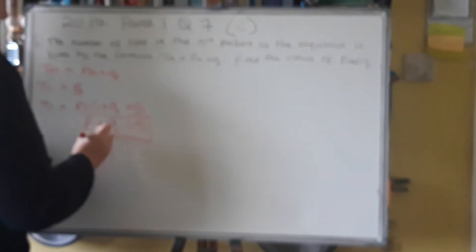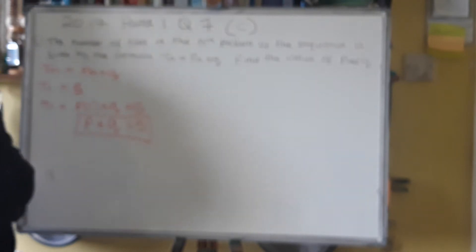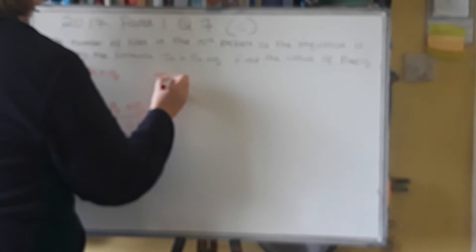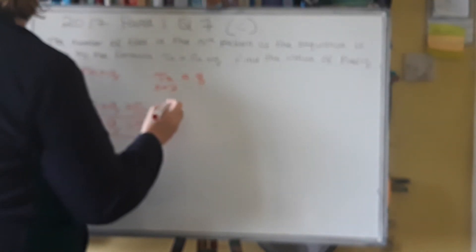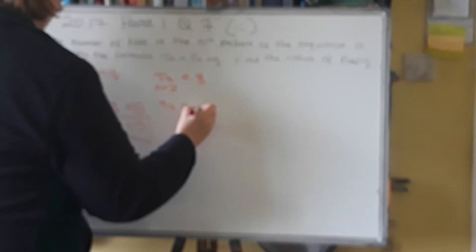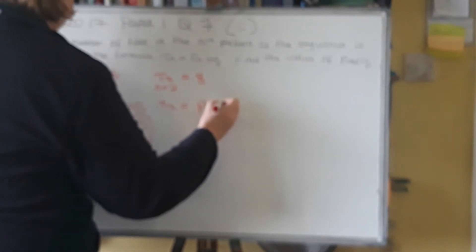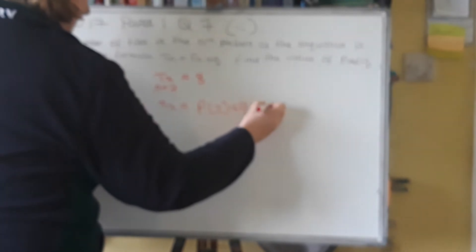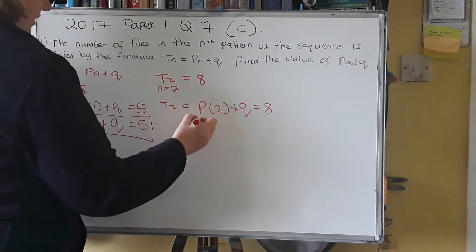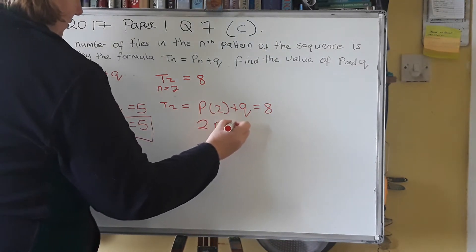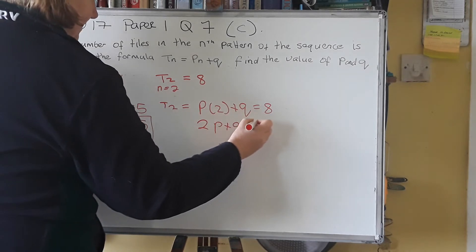Now you need a second one to get a simultaneous equation to work them out. So let's take T2. In this case, n will be 2. And you know from your table that T2 has 8 tiles in it. So again, we can do T2 is P by 2 plus Q equals 8. So that's 2P plus Q equals 8.